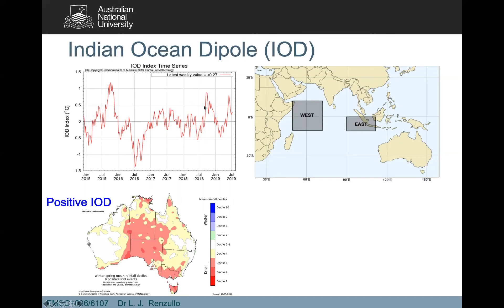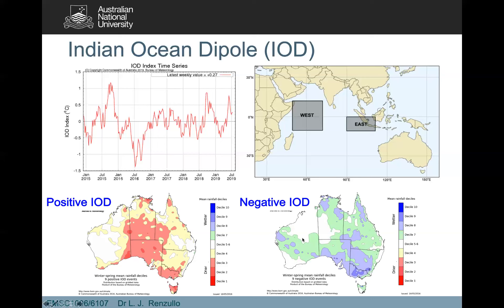When it's in the positive phase, so when it's above the line, you're generally getting lower than normal rainfall. Remember the decile maps we talked about before — ranking the rainfall distributions and looking at how rain fares from lowest ever to highest ever recorded. Large parts of Australia during a positive IOD are in the lower than normal, maybe even lowest ever recorded rainfall. In a negative IOD phase, the opposite happens — increased chance of rainfall, sometimes in the highest ever recorded range, well above average for parts of southeast Australia.